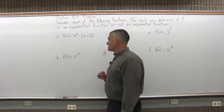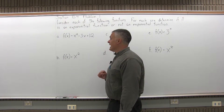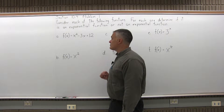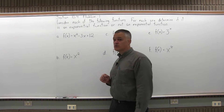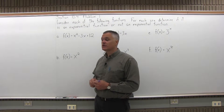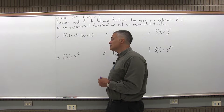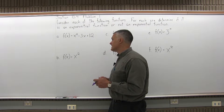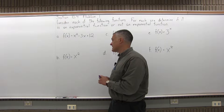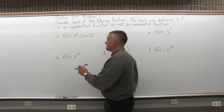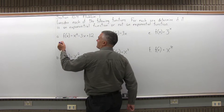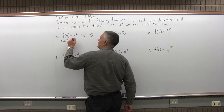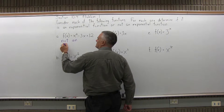Part a: the first function says f of x equals x squared minus 3x plus 12. Is that an exponential function or not? The answer is it's not, because the variable is in the base. The exponent is just a regular number — you have a second power and a first power. So for part a, the answer is not an exponential function.